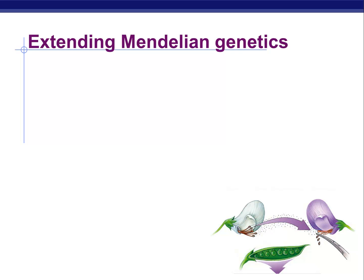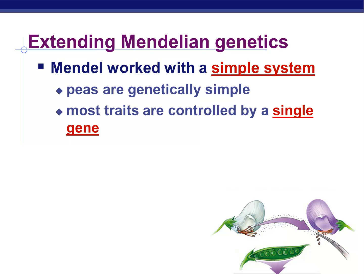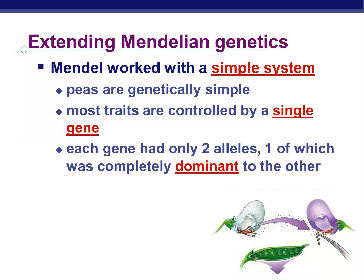Now we talked quite a bit about Mendel and his peas, and I mentioned in class that he was pretty lucky because peas were pretty simple. With peas, everything we looked at was controlled by a single gene — just one gene for flower color, just one gene for how big the plant was. And those genes all had the same pattern of inheritance, where one was dominant to the other. So purple flowers were dominant to white flowers, tall plants were dominant to short plants, yellow peas were dominant to green peas. It was all very simple, and it was lucky that they were that way for Mendel, because otherwise he might not have had his insight into genetics.